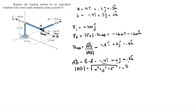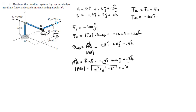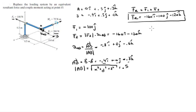F2 has nothing in the j direction because it lies parallel to the xz plane. Now that we have the Cartesian vector forms of both forces, we can find the resultant force by adding them: combining i, j, and k components gives us -160i - 100j - 120k.